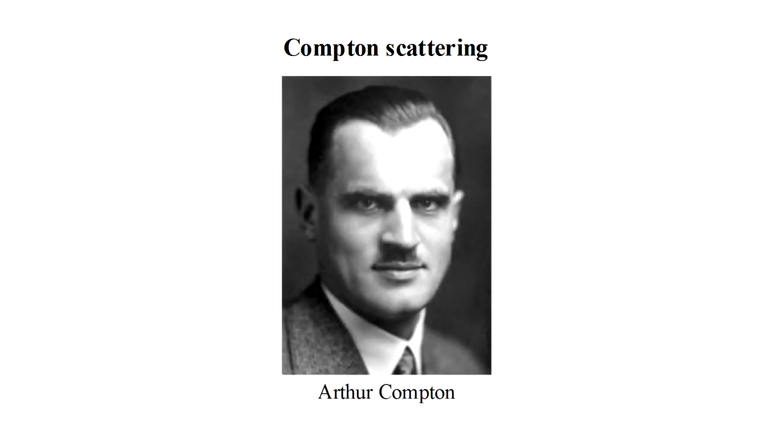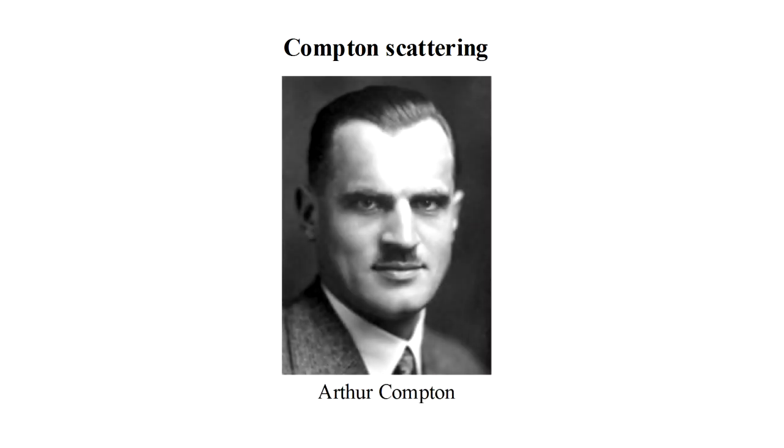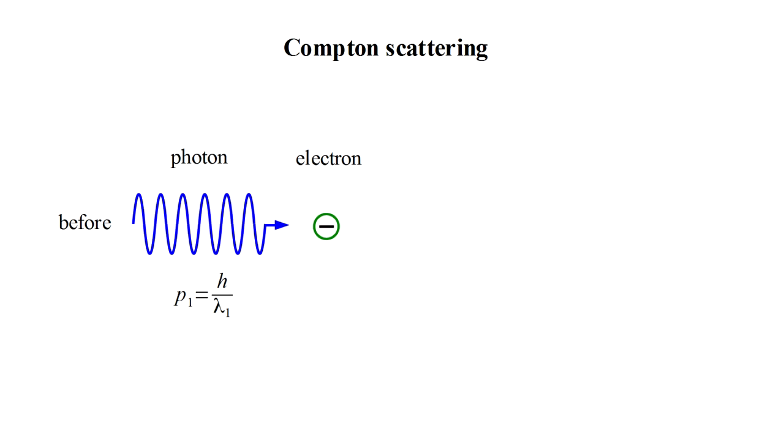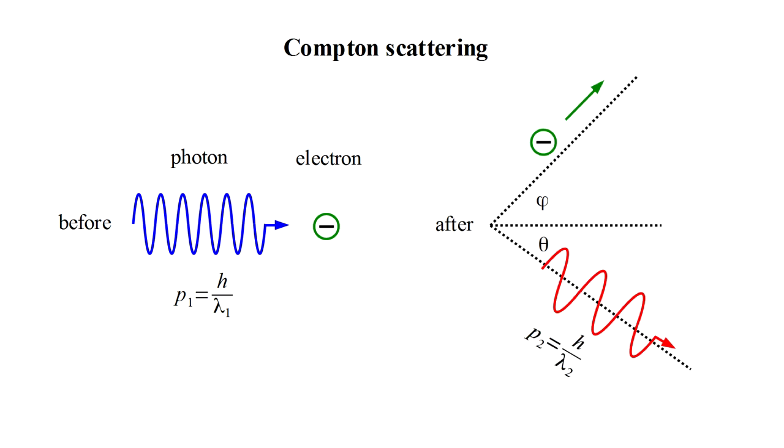The proverbial final nail in the coffin of skepticism towards the photon concept was provided by observations of so-called Compton scattering, discovered by Arthur Compton. He found that if an electron at rest is illuminated by high-frequency light, the electron scatters off in some direction, carrying kinetic energy and momentum, while the light is scattered off in another direction and with a longer wavelength.